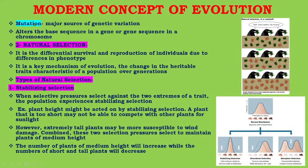Next, mutation is a major source of genetic variation and it alters the base sequence in a gene or gene sequence in a chromosome. The second feature of the modern concept is natural selection — the differential survival and reproduction of individuals due to differences in phenotype. It is a key mechanism of change in heritable traits characteristic of a population over generations, and it can be divided into the following types.